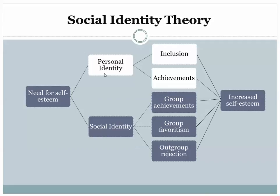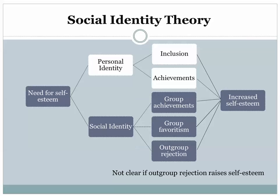Social identity theory is a complex theory recognizing that our sense of self is based on personal identity as well as a social, more collective identity. Personal identity is based on things like inclusion in the group and achievements, while social identity is tied more to group-level achievements — favoring your group and rejecting the out-group. Research has not fully verified all these connections, particularly for out-group rejection; in-group favoritism is more strongly linked to self-esteem. That wraps up our analysis of inclusion and identity in groups. Thank you for joining me.